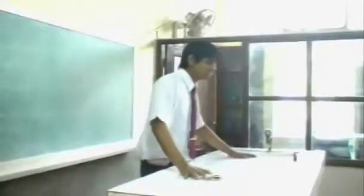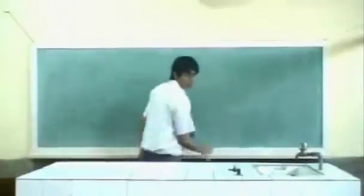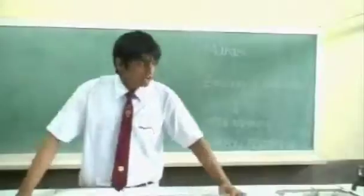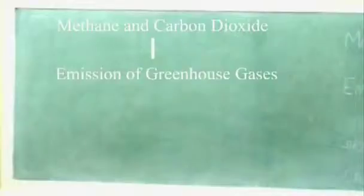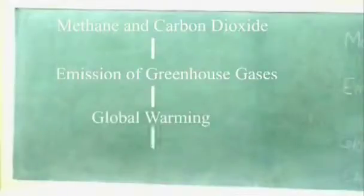Okay students, the class is dismissed. Sahil, you still there? Sir, what are carbon footprints? A carbon footprint is a measure of the impact human activities have on the environment in terms of the amount of greenhouse gases produced, measured in units of carbon dioxide. Methane and carbon dioxide are some of the greenhouse gases and the emission of greenhouse gases leads to global warming, and this is measured by carbon footprints.